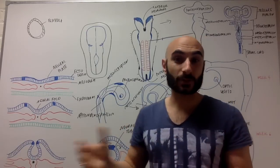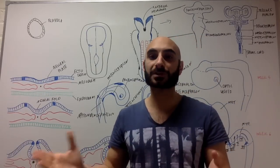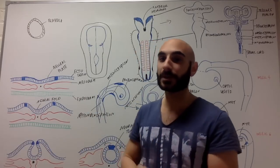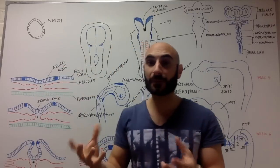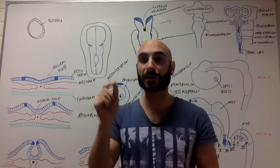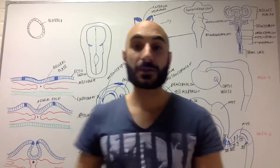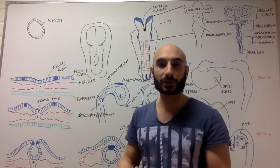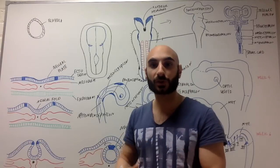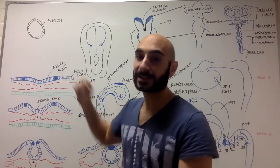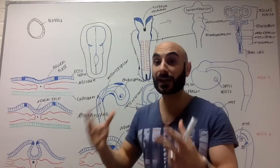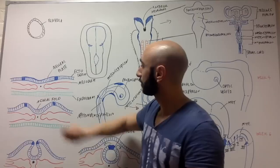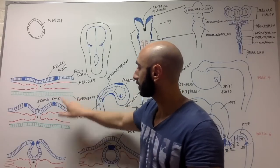As with any discussion on embryology, we'll start at the beginning with fertilization. A sperm fertilizes an egg and you'll have a blastula. The blastula is a sphere of cells with a liquid-filled center, and it will move down through the uterine tubes into the uterus and implant on the uterine wall. Once it implants, we'll have the development of the three germ layers: the ectoderm, the mesoderm, and the endoderm.